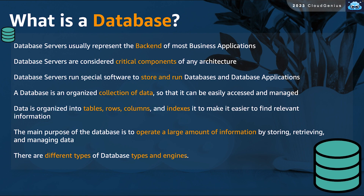A database is a collection of data and datasets organized with a certain defined structure, to make it easier to be accessed and managed. Data in databases is organized into tables, and every table is made of a set of rows and columns. Every table also has an index or multiple indices to make it easier to search and fetch data within that table.